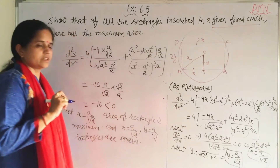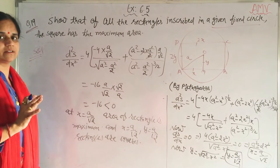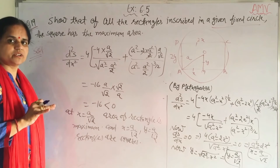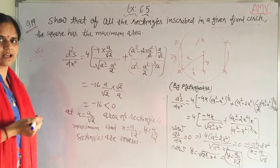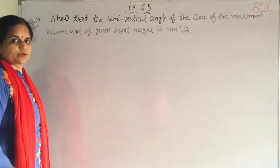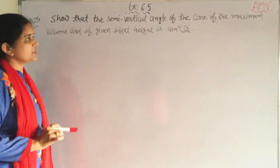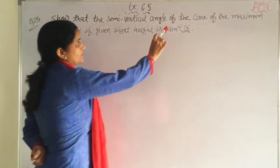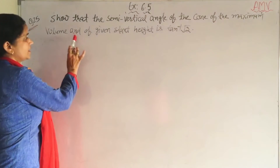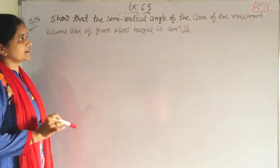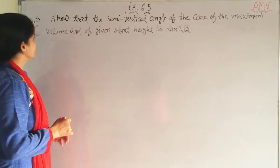I will cover 3 or 4 questions in one video — you practice all questions, and if you have any doubt, ask. Question number 25: Show that the semi-vertical angle of a cone of maximum volume and of given slant height is tan⁻¹(√2).